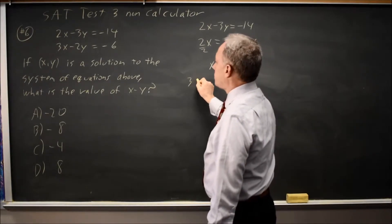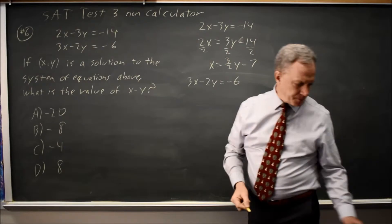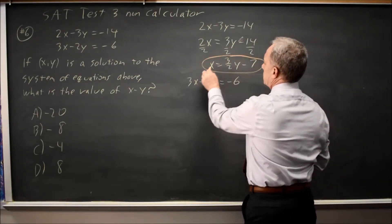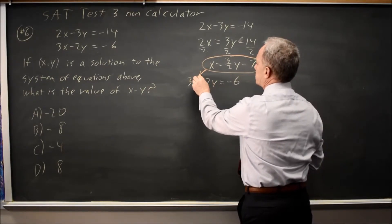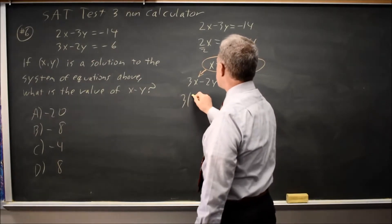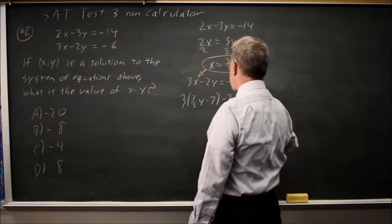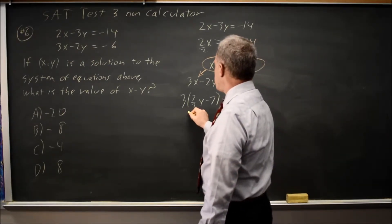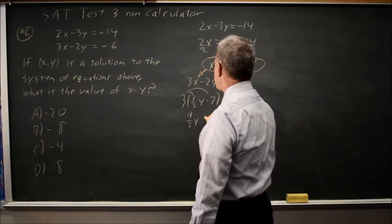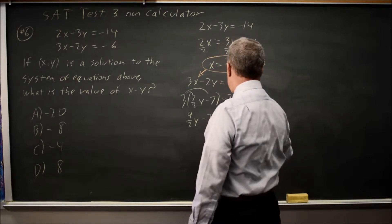And my second equation was 3x minus 2y equals negative 6. So if I take this x expression and substitute it in for x, I'll only have one variable. So 3 times 3 halves y minus 7 minus 2y equals negative 6. 3 times 3 halves y is 9 halves y. 3 times negative 7 is minus 21 minus 2y equals negative 6.